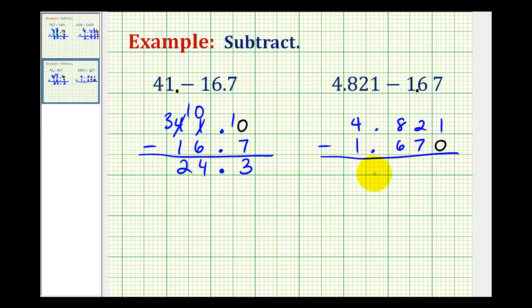We'll bring down the decimal into our difference, and now we'll subtract as we normally do. We have one minus zero, that's one. Here we have to borrow, this becomes a seven, this becomes twelve. Twelve minus seven is equal to five. Seven minus six is equal to one, and four minus one is equal to three. So our difference is three point one five one, or three and one hundred fifty-one thousandths.